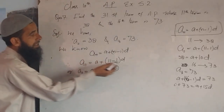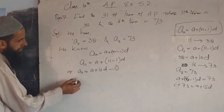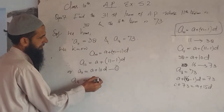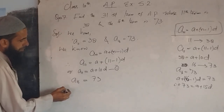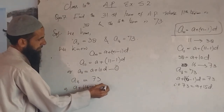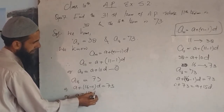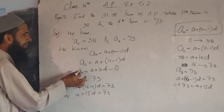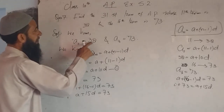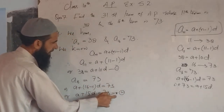A_16 = 73. This implies a_16 = a plus (16 minus 1) into d = 73, so a plus 15d = 73. The value of a_11 is 38, so we substitute that. Taking this as equation two.